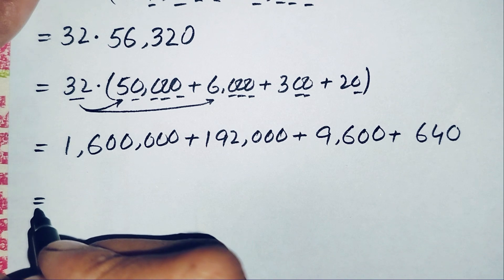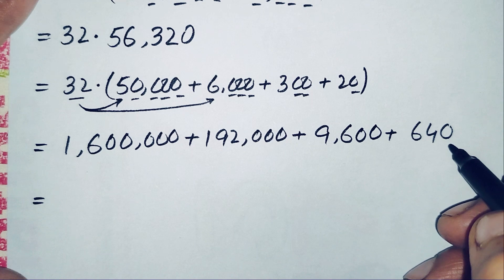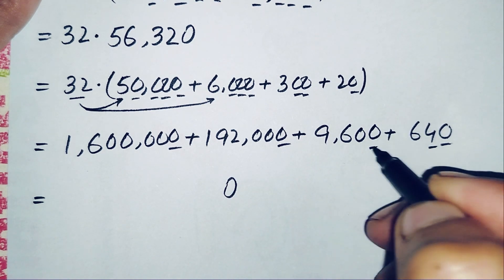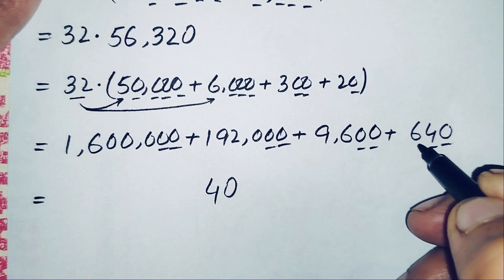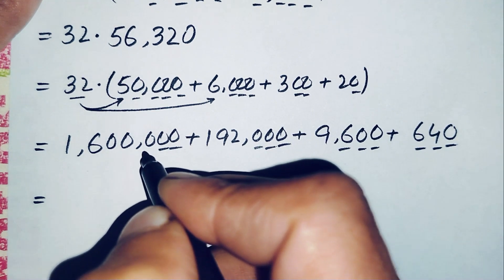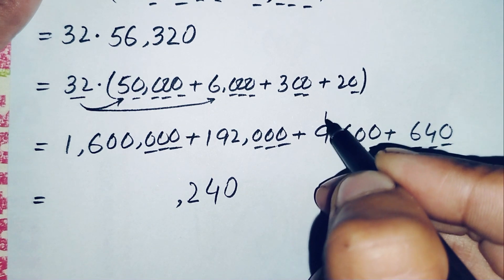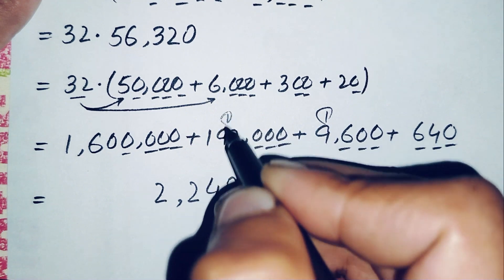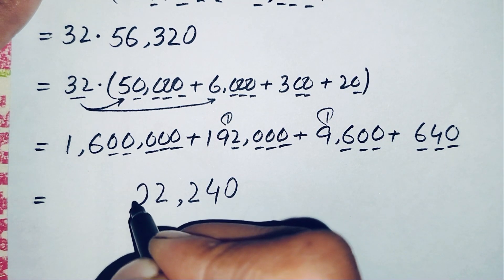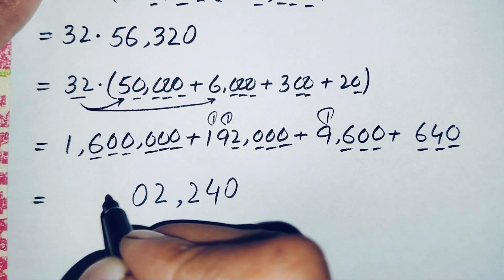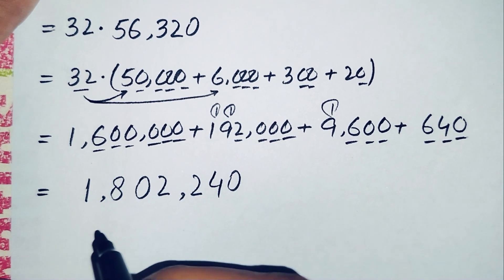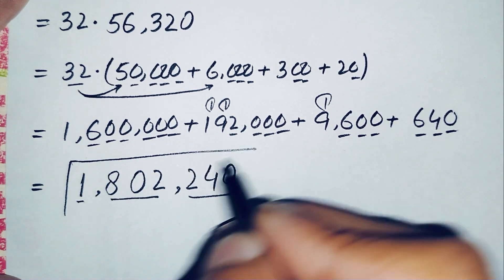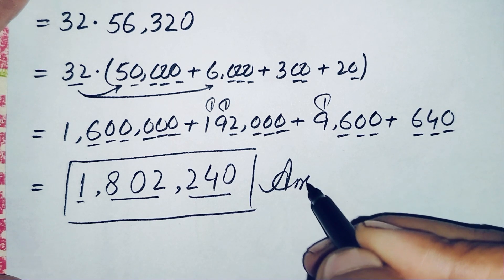Now we add all four numbers, starting from the ones position. Adding 1,600,000 + 192,000 + 9,600 + 640: ones gives 0; tens: 4+0+0+0=4; hundreds: 6+6=12, carry 1; and continuing the addition, the final result is 1,802,240.